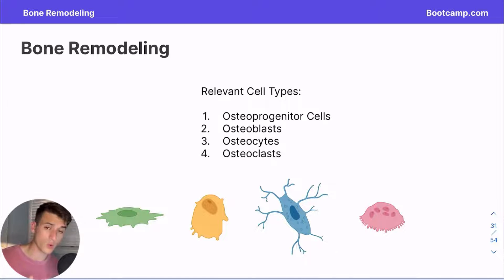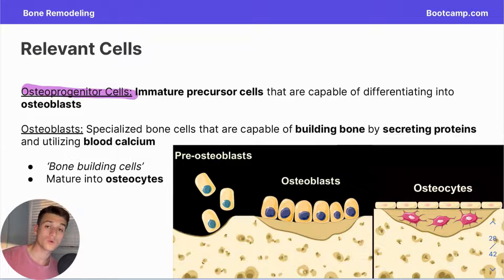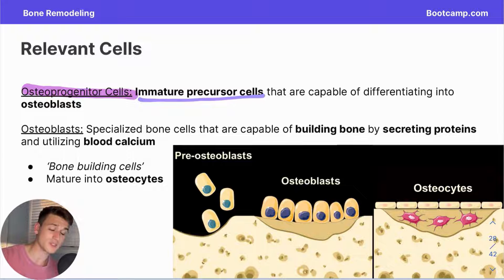The important cells for this topic are osteoprogenitor cells, osteoblasts, osteocytes, and osteoclasts. We'll begin with osteoprogenitor cells. A common trend we'll see across this topic is less mature cells developing into more mature versions to complete more differentiated tasks. Osteoprogenitor cells are the perfect place to start because they are immature precursor cells that will develop into a different cell type — the osteoblast.